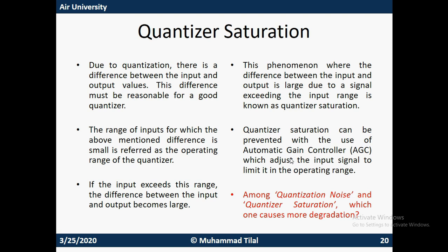So if your input is within this range, then you are dealing with quantizer noise. But there are certain cases when the input exceeds this range, and as a result, the difference between the input and output becomes large — meaning there will be a larger amount of error in the quantization process. When this phenomenon occurs, where the difference is large fundamentally because the signal exceeds the input range, this is known as quantizer saturation.